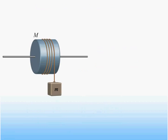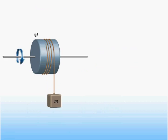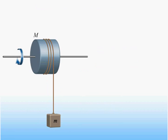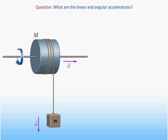Here we see the disk from the last slide with a weight added to the end of the string. When we release the weight, the weight falls, pulling the string and causing the disk to rotate. Therefore, we have both the translational motion of the weight and the rotational motion of the disk to deal with. We would like to calculate the resulting linear and angular accelerations.